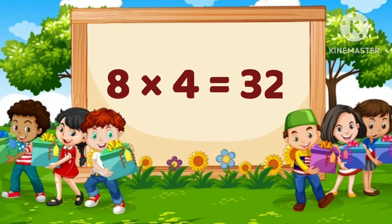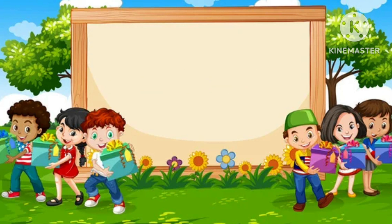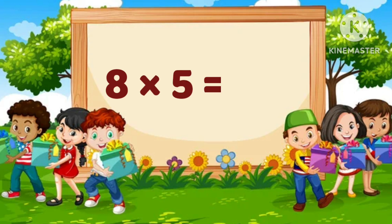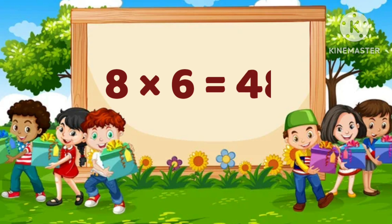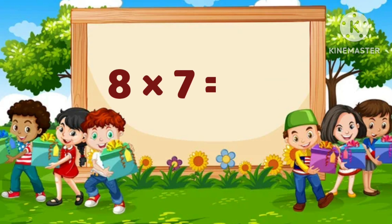8 times 4 is equal to 32. 8 times 5 is equal to 40. 8 times 6 is equal to 48. 8 times 7 is equal to 56.